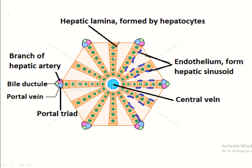The space between two hepatic laminae is known as the lacunae. Within the lacunae, the hepatic sinusoid is present. At the corners, you can find the portal triad, which contains branches of the portal vein and the endothelium of the hepatic sinusoid.